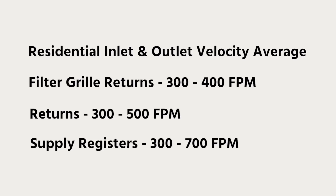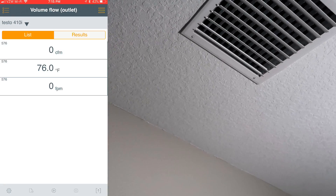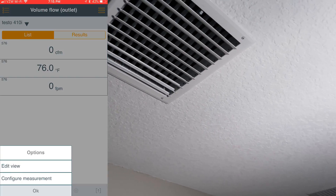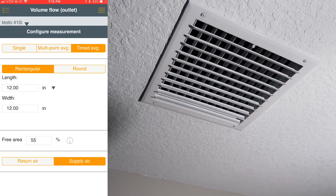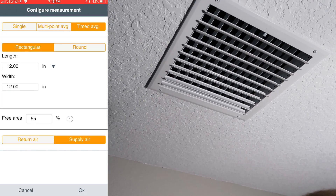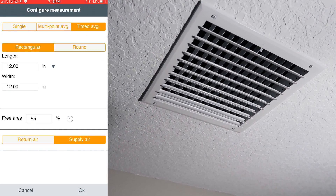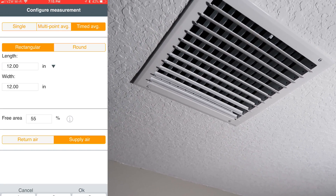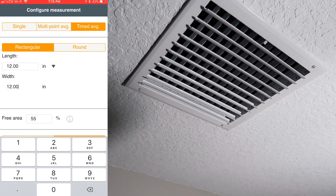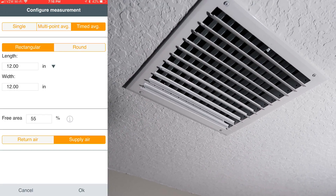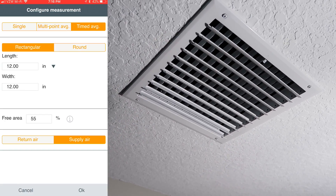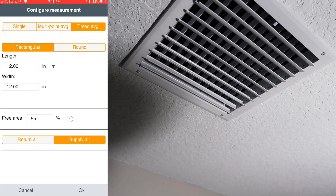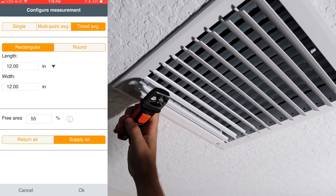I've intentionally set really low velocities on this for the purpose of having low air noise. I'm going to be doing a timed average traverse. You can see I've got it already set in a 12 inch by 12 inch, 55% free area — that is off the specs for this actual vent. You have to look carefully at the specifications for the vents in order to find that. But in general, you can use this to average the velocity and paint the entire vent.